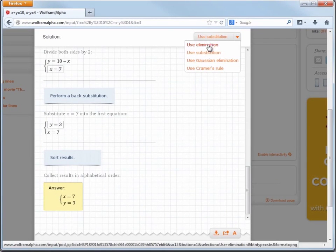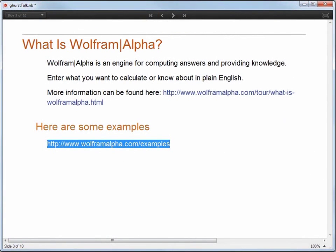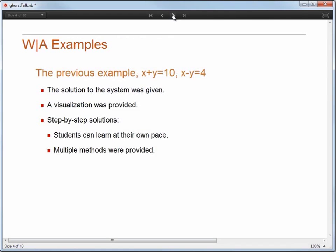So in this example, we can solve by elimination, substitution, Gaussian elimination, or Cramer's rule. So in this previous example, to reiterate, the solution to the system was given, a visualization was provided, and we also have step-by-step solutions. This enables students to learn at their own pace and to solve kind of how they would want to solve. We provided multiple methods for this reason.